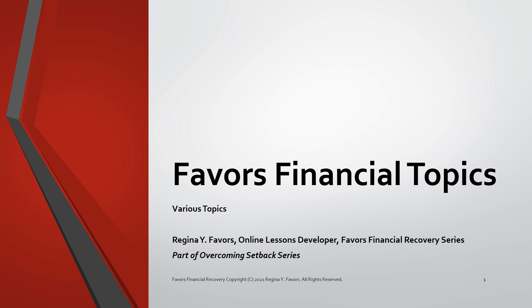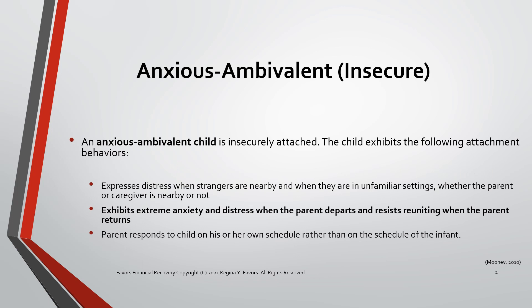This covers financial topics and various topics. Anxious-ambivalent, or insecure, attachment — an anxious-ambivalent child is insecurely attached. The child exhibits the following attachment behaviors: expresses distress when strangers are nearby and when they are in unfamiliar settings, whether the parent or caregiver is nearby or not, and exhibits extreme anxiety and distress when the parent departs, and resists reuniting when the parent returns.